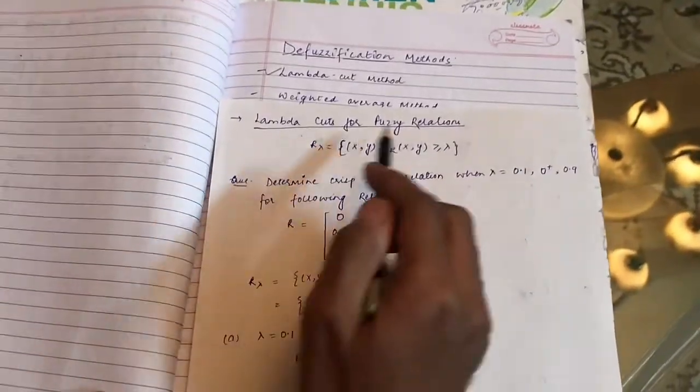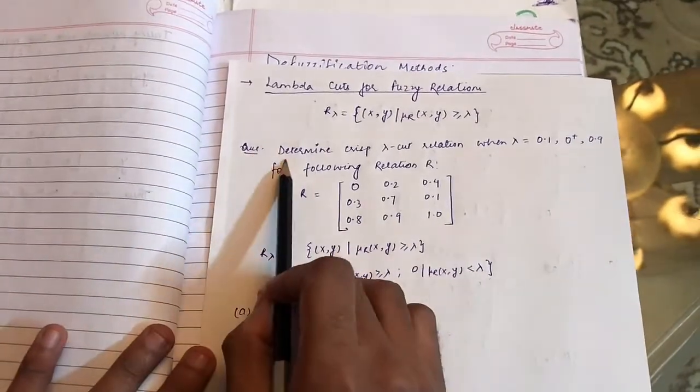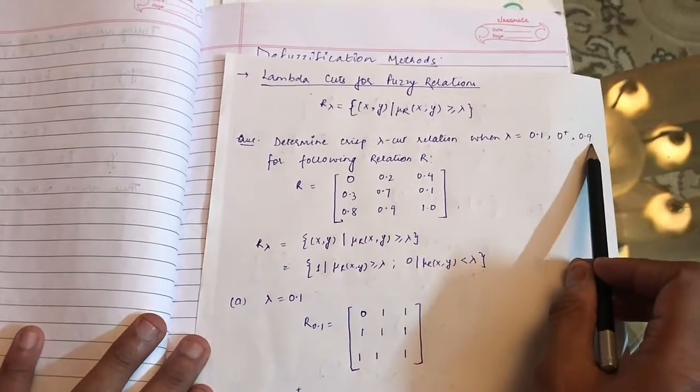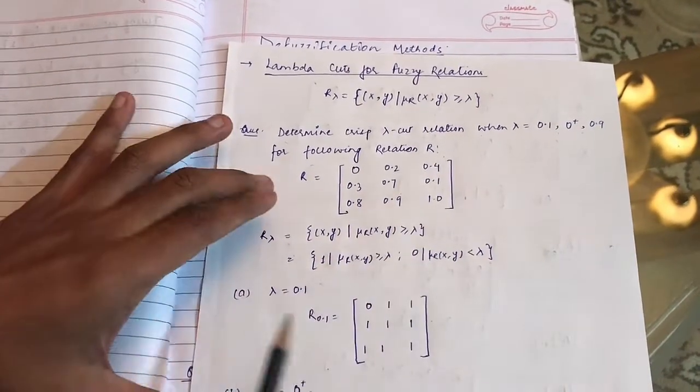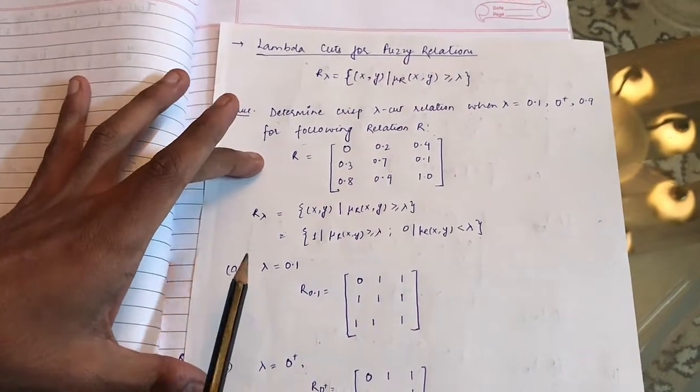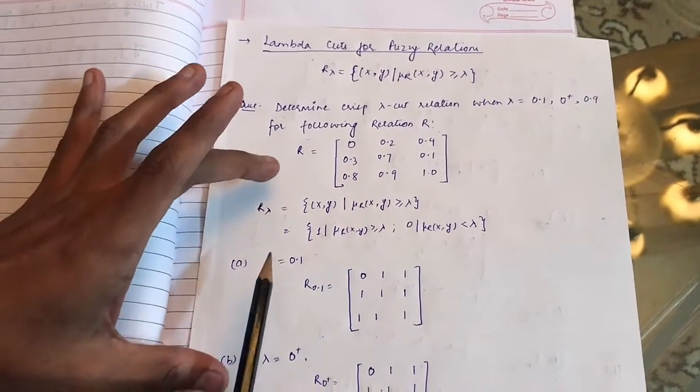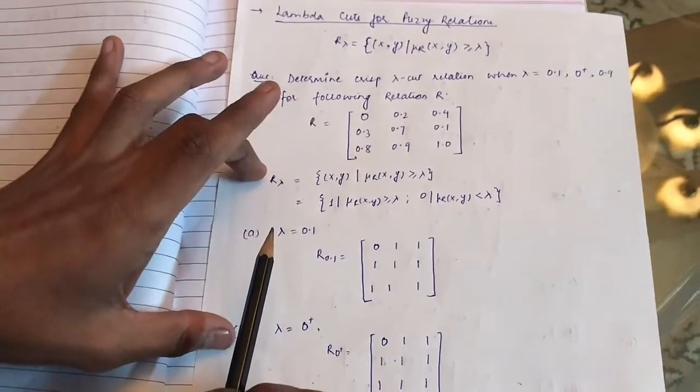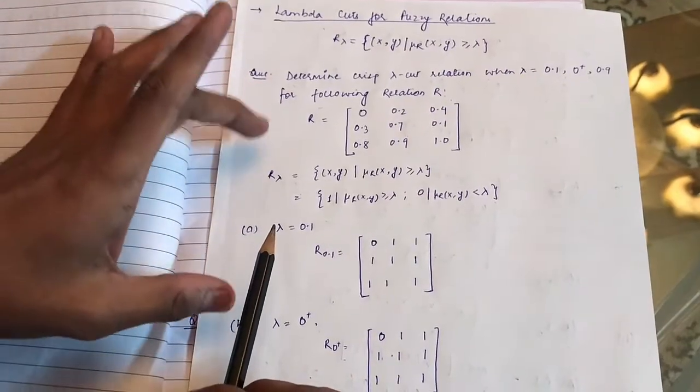Now let us see lambda cuts for fuzzy relations. Determine the crisp lambda cut relation when lambda equals 0.1, 0+, and 0.9 for the following relation R. We define the lambda cut relation as: if the value is greater than or equal to lambda, then we will make it 1; if it is less than lambda, then we will make it 0.